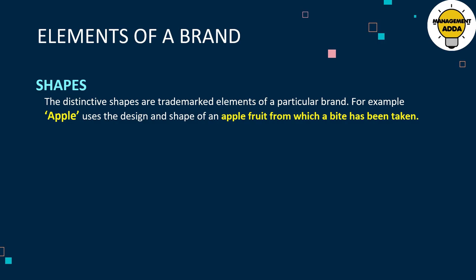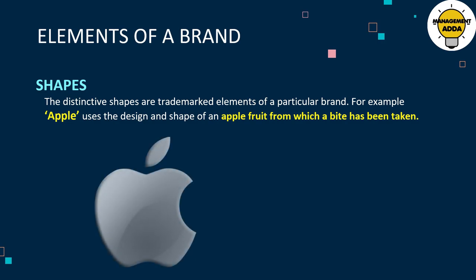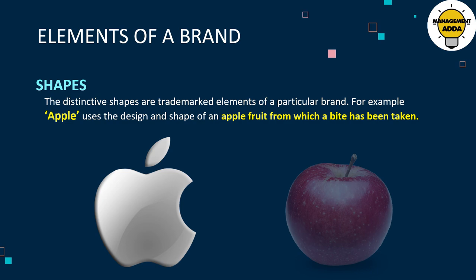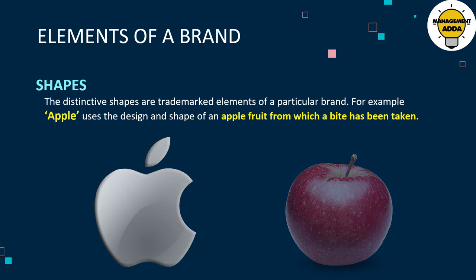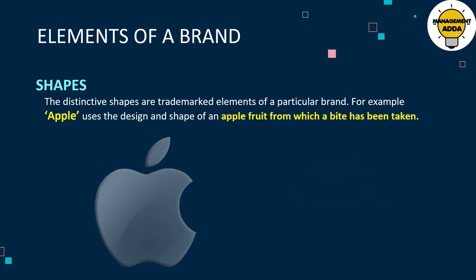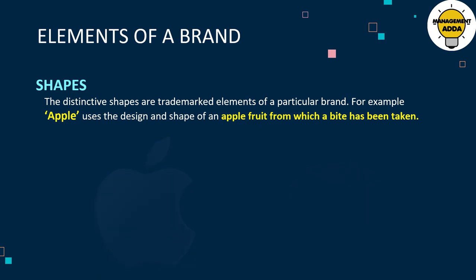The next element is shapes. Distinctive shapes are trademarked elements of a particular brand. For example, Apple uses the design and shape of an apple fruit from which a bite has been taken. This is a shape used only for the Apple brand; other brands cannot use this shape.